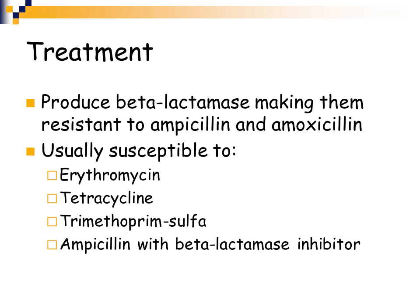Moraxella catarrhalis produces beta-lactamase, which makes it resistant to ampicillin and amoxicillin. However, it is normally susceptible to erythromycin, tetracycline, trimethoprim-sulfa drugs, and ampicillin with a beta-lactamase inhibitor. Since it produces beta-lactamase, you need a beta-lactam antibiotic that includes a beta-lactamase inhibitor to inhibit that enzyme — more on this when we cover antibiotics later in the semester.